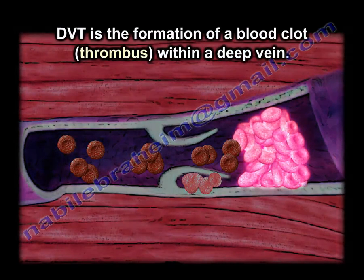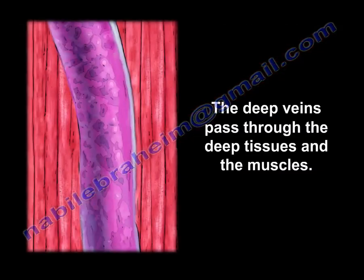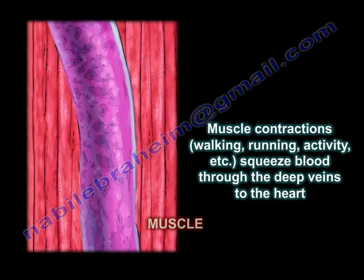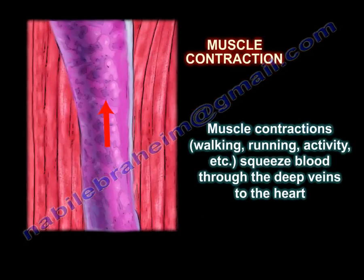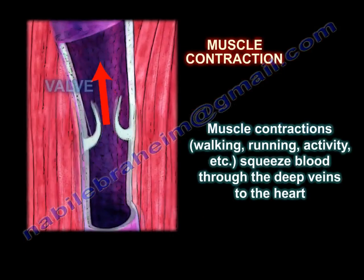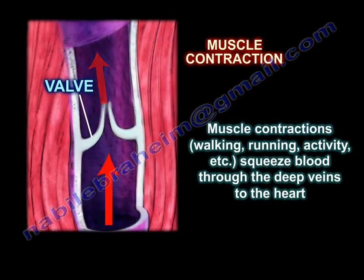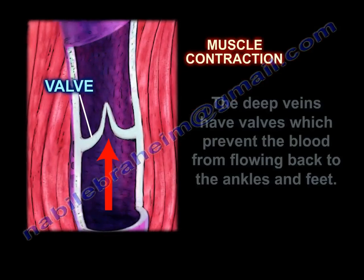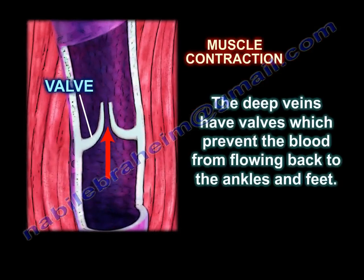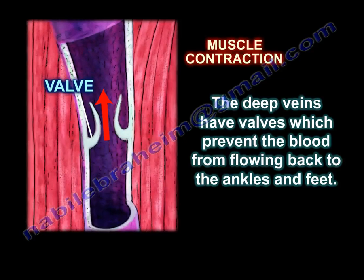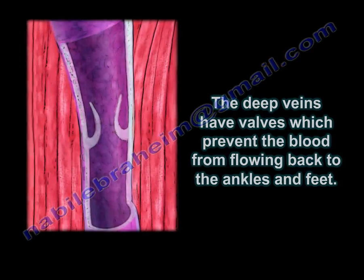DVT is the formation of a blood clot, or thrombus, within a deep vein. The deep veins pass through the deep tissue and muscles. Muscle contractions from walking and running activity will squeeze the blood through the deep veins to the heart. The deep veins have valves which prevent the blood from flowing back to the ankles and feet.